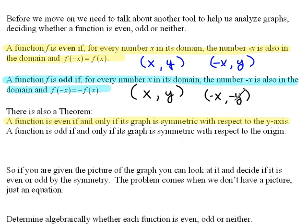Now think about where we've had this before. Where did we have both our x's and our y's changing signs? A function is odd if and only if its graph is symmetric with respect to the origin. This is origin symmetry.